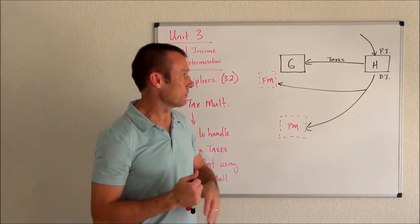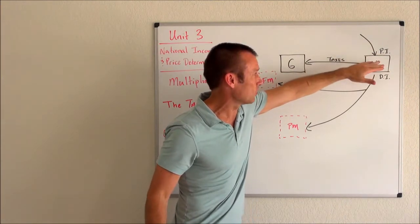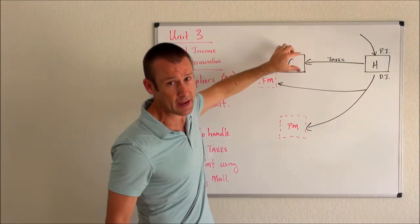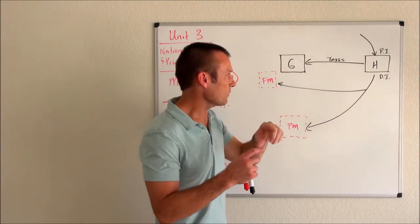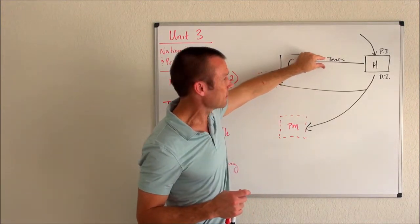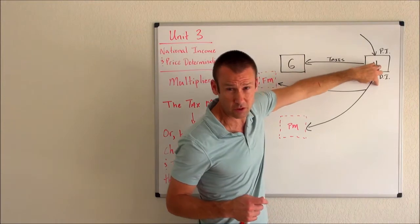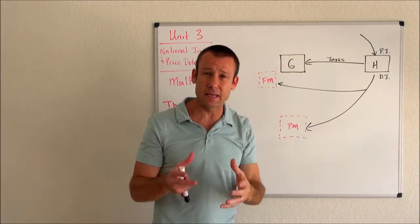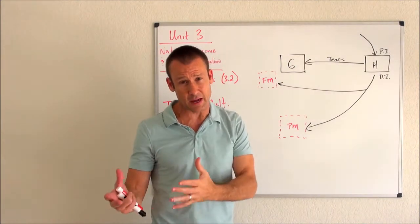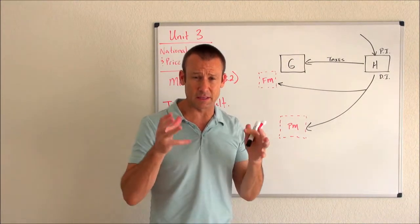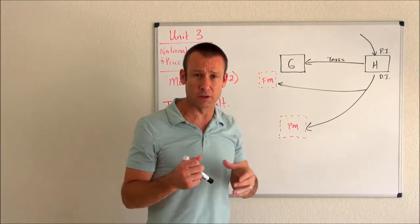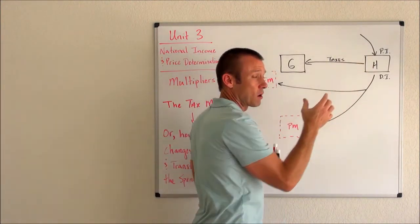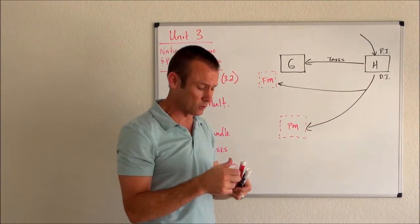We're going to act like we're in a recession, so we're going to reduce taxes. We've got personal income flowing into households. From personal income, households have to pay some taxes — personal income tax. The remainder flows to disposable income. So when we decrease taxes, more of this personal income is going to flow to disposable income.